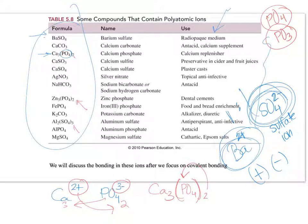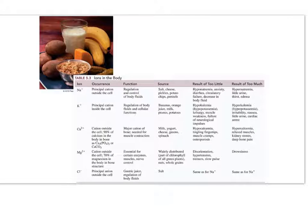When naming compounds with polyatomics, name the metal first as usual, then use the polyatomic ion name directly from the chart without changing the ending. For example, SO4 is sulfate, CO3 is carbonate — write exactly as listed. Unlike nonmetal anions (which get an -ide ending), polyatomic names are used as-is.